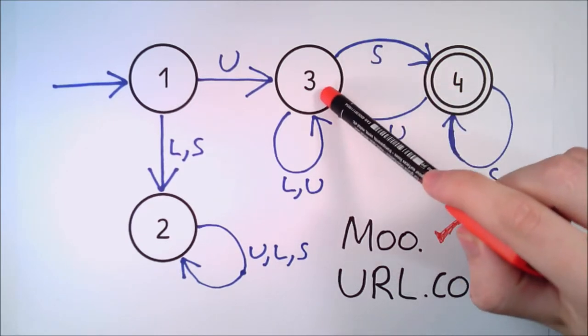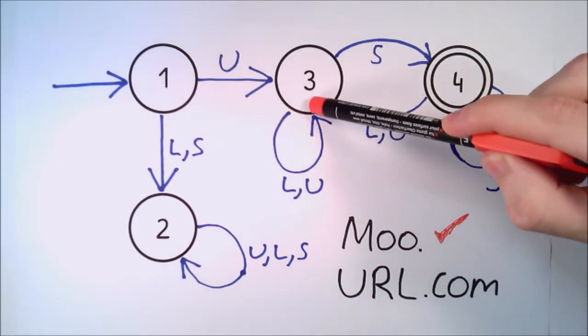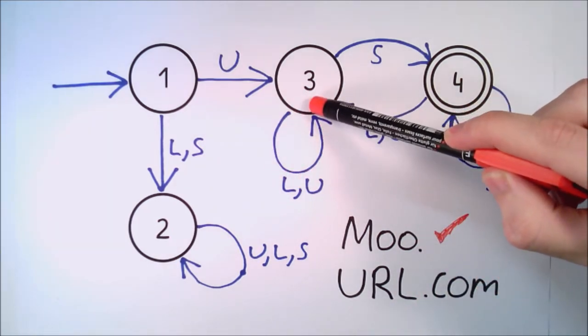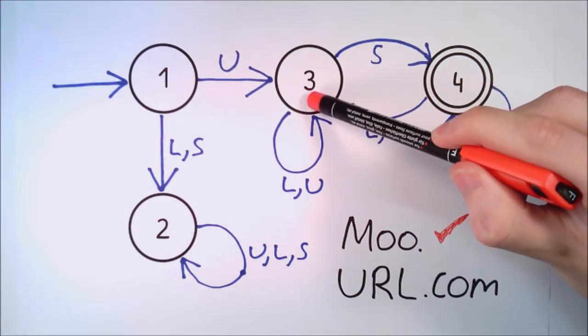A lowercase C transition back to state 3, another lowercase O transition to state 3, and lastly, the lowercase M transition to state 3.